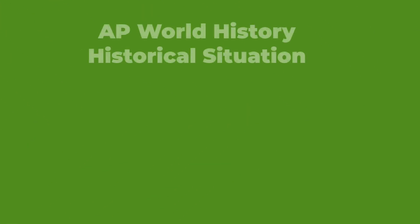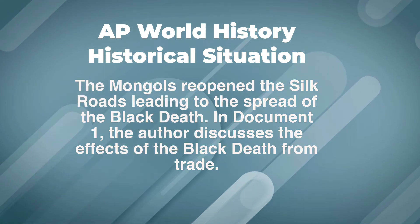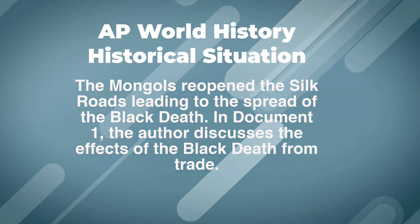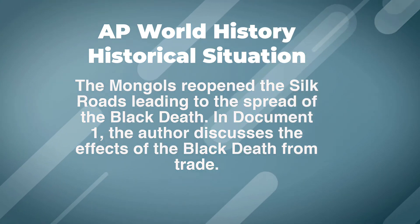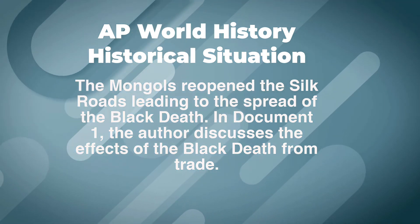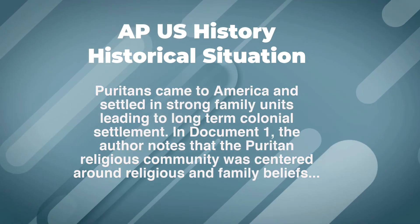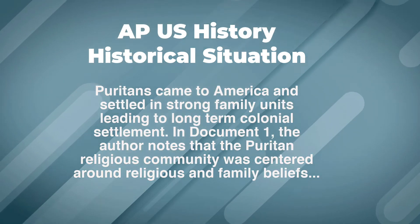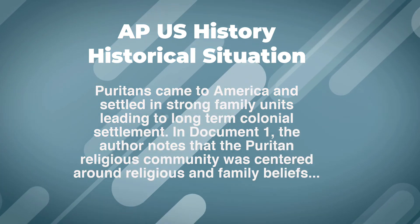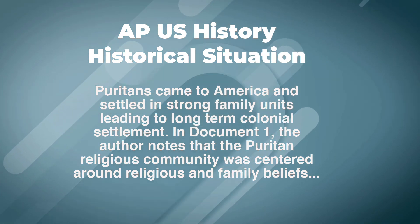In AP World History, if we were talking about trade routes at the beginning of world history, we might say: the Mongols reopened the Silk Roads, leading to the spread of the Black Death. In document one, the author discussed the effects of the Black Death from trade. Notice how the Mongols and the Silk Roads help show the influence on the Black Death. For AP US History: Puritans came to America and settled in strong family units, leading to long-term colonial settlement. In document one, the author notes the Puritan religious community was centered around religious and family beliefs. Notice how the Puritan mindset helps identify and influence the document.